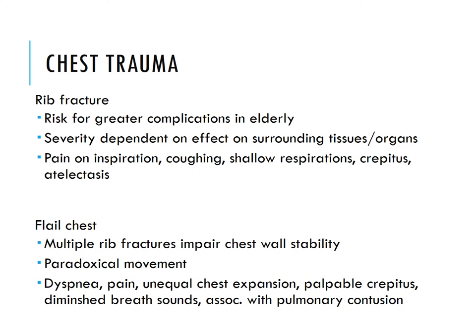Flail chest results from multiple rib fractures causing loss of chest wall stability and paradoxical movement — the chest moves opposite to the expected direction during breathing. Symptoms include dyspnea, pain, unequal chest expansion, palpable crepitus, and diminished breath sounds associated with pulmonary contusion.